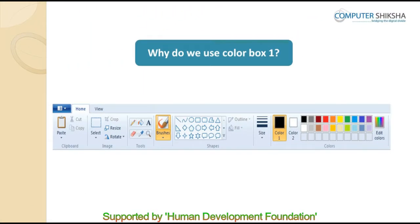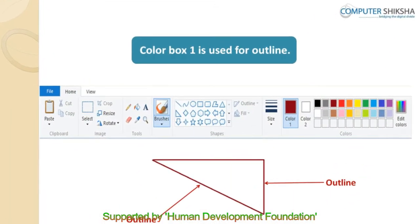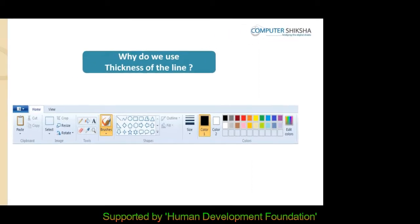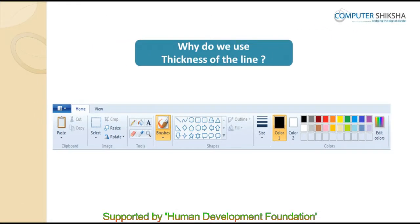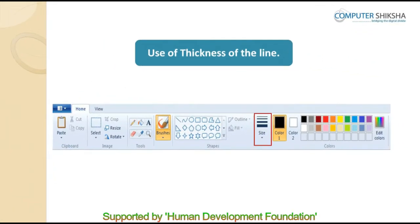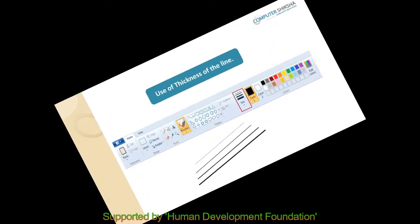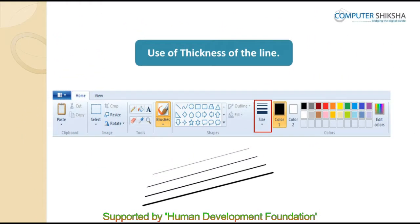Can you all recall why do we use the color box 1? We use the color box 1 to change the color of the outline. Can you tell why do we use the thickness of the line tool? With the thickness of the line tool, you can increase or decrease the line's thickness.